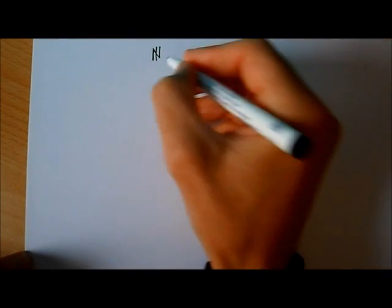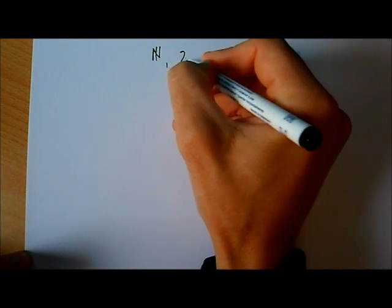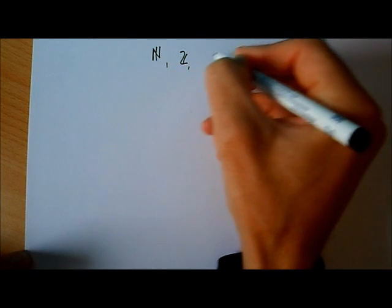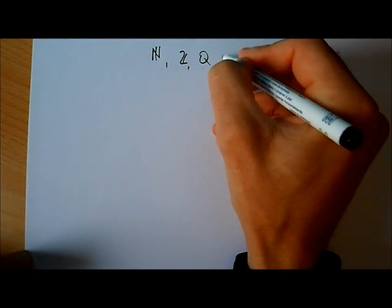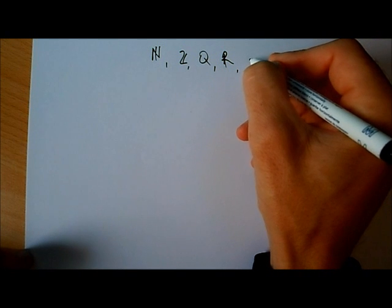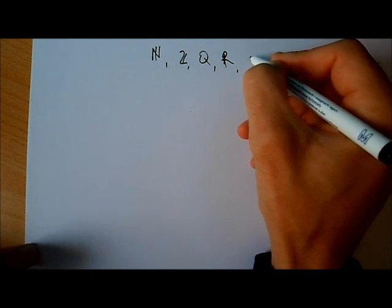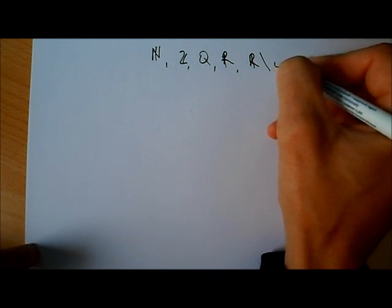In the second video we're going to have a look at the set of numbers. If you remember the types of numbers that we have: we've got the natural numbers, symbol N; we've got the integers, symbol Z; we've got the rationals, Q; we've got the real numbers, symbol R; and then we've got the irrational numbers, which is R less Q.